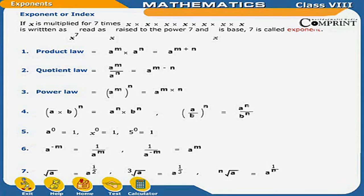Rule 6: A raised to the power minus M is equal to 1 upon A raised to the power M. Conversely, 1 upon A raised to the power minus M is equal to A raised to the power M.